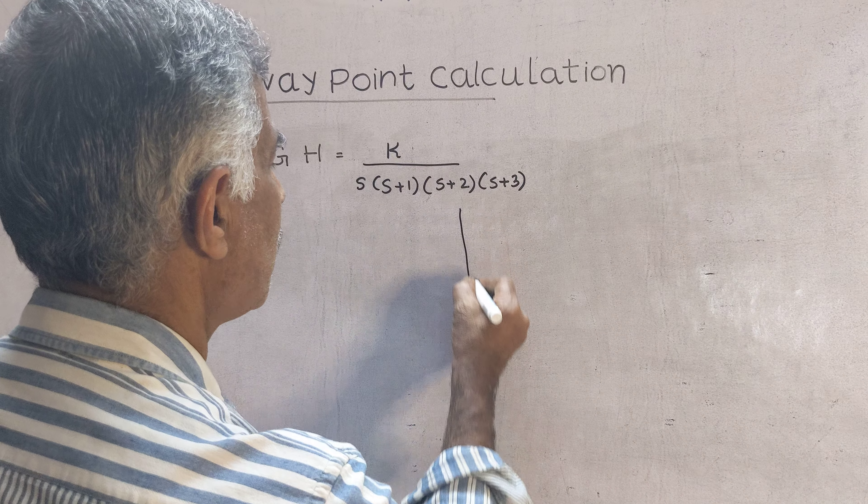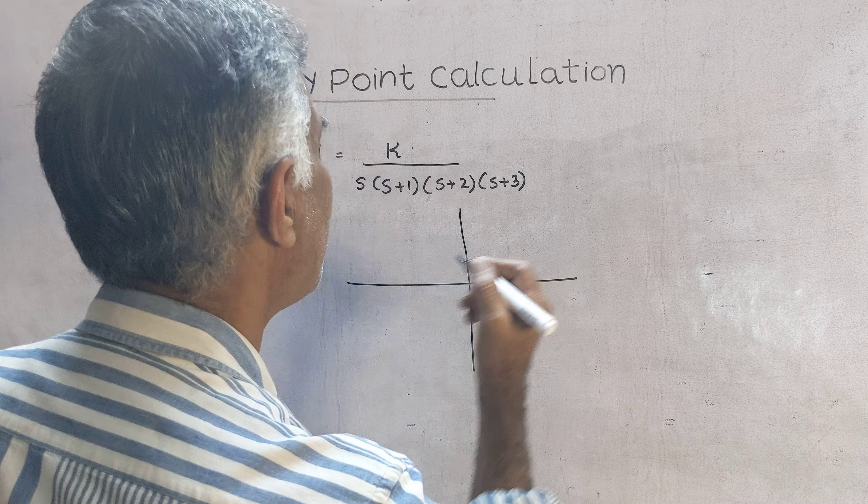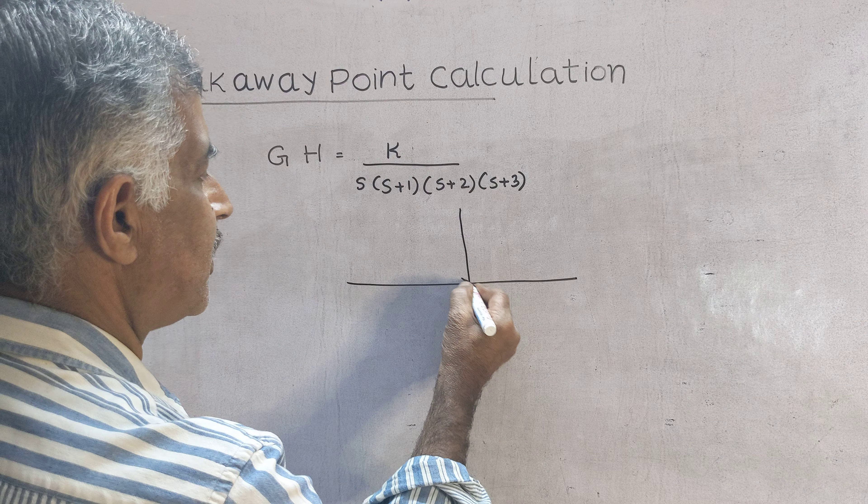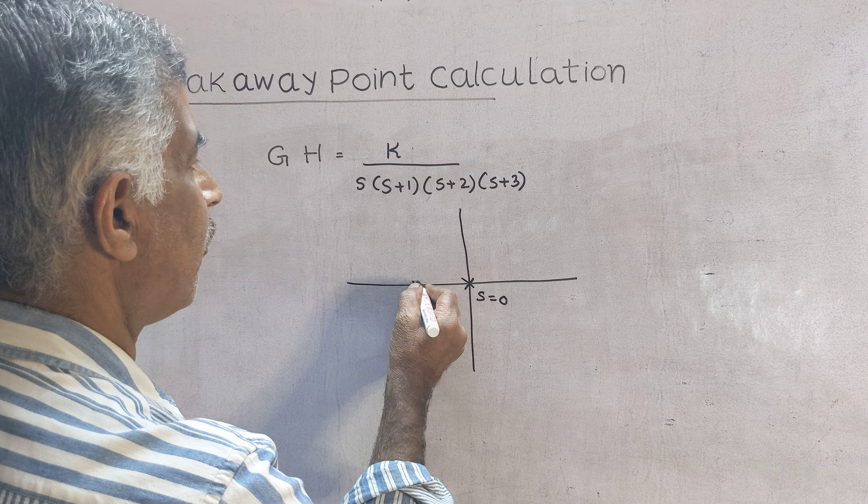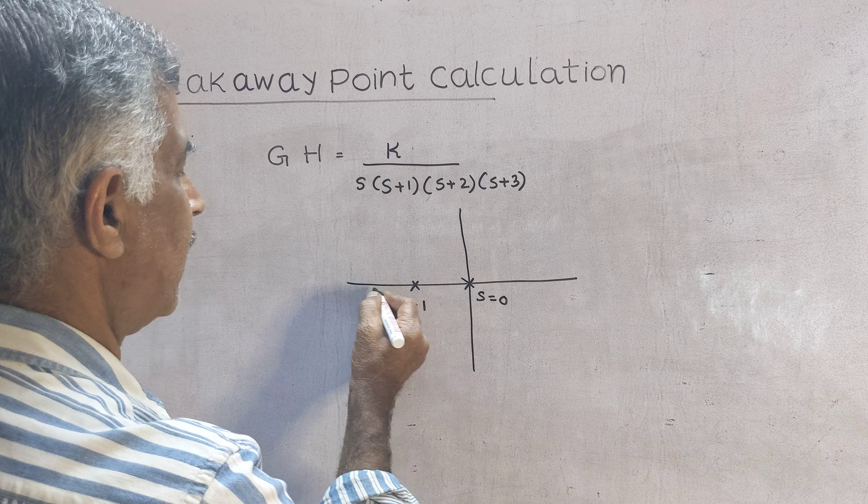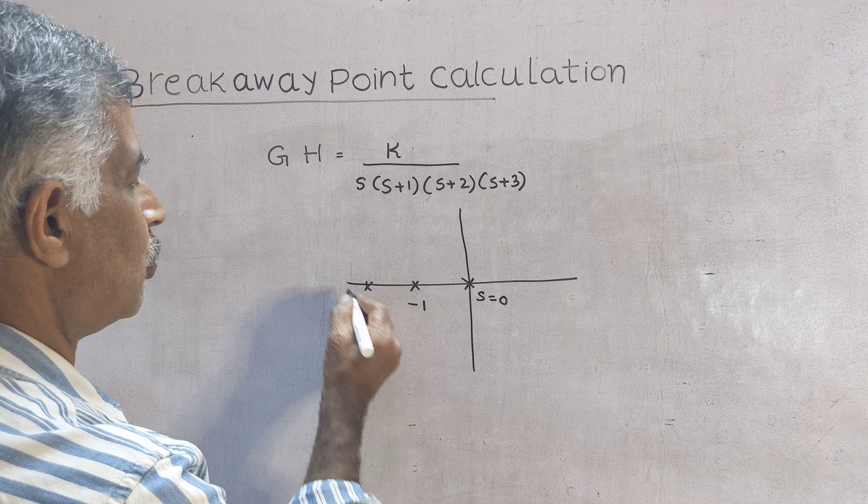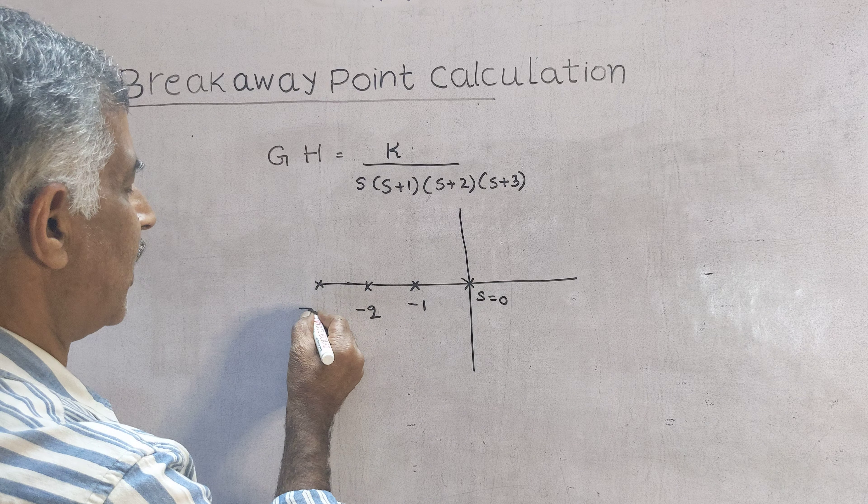The tip you are supposed to follow is plot poles: s equal to 0, s equal to minus 1, s equal to minus 2, and s equal to minus 3.